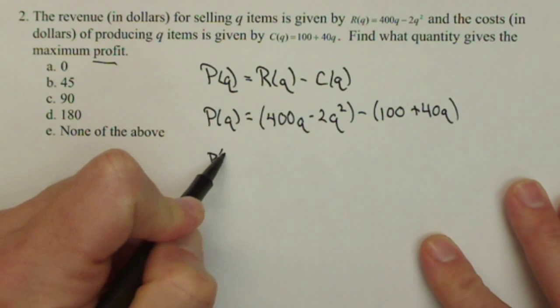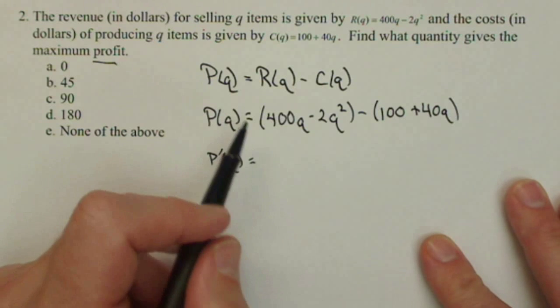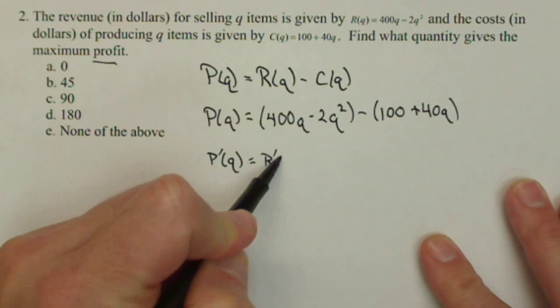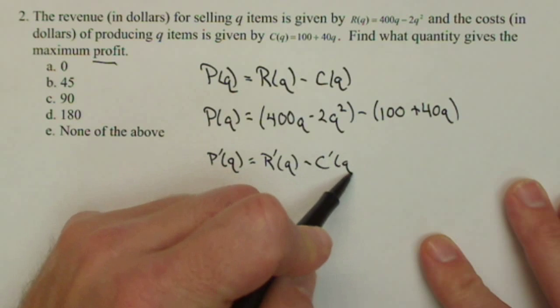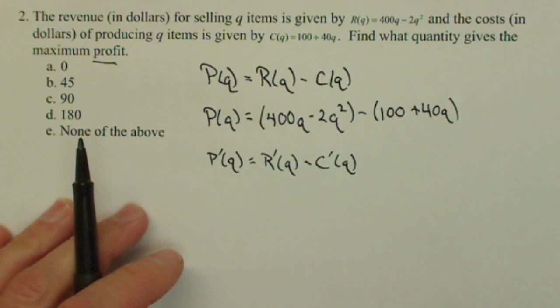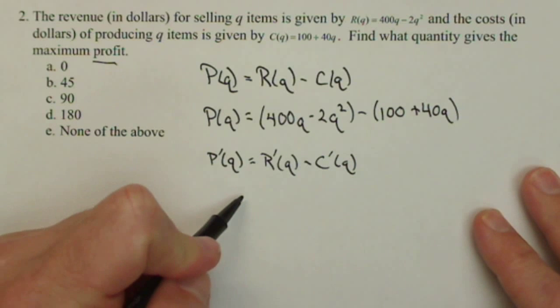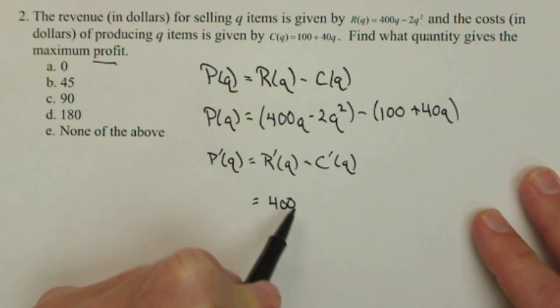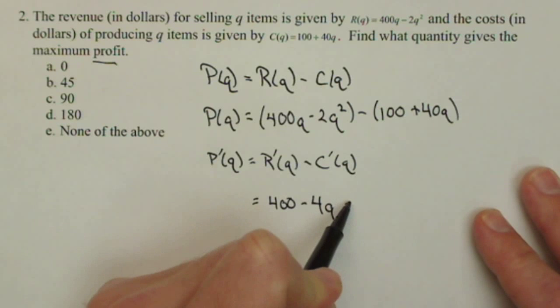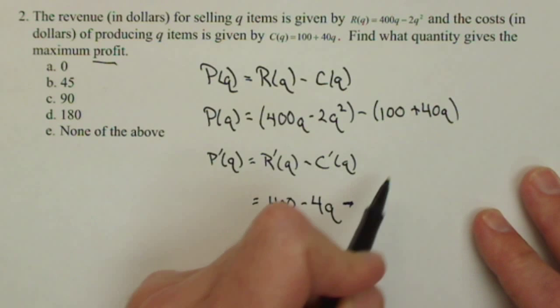Now for the derivative, we want to find if there's any critical values. It's just the derivative of R minus the derivative of C. We know that from our properties of derivatives. So the derivative of R is 400 - 4q and the derivative of C is just 40.